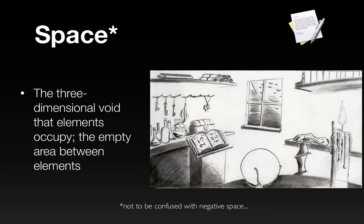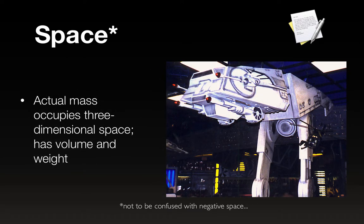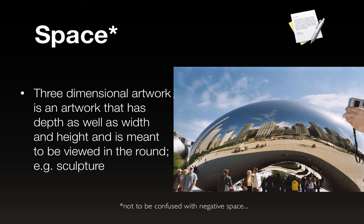We're talking about a three-dimensional scene here — of course the illusion of a three-dimensional scene, since we're looking at a flat image. An actual three-dimensional object is going to occupy an actual three-dimensional space; three-dimensional objects have volume and weight. That's a way of saying sculptures have mass and size. Three-dimensional artwork has depth as well as width and height and is meant to be viewed in the round — for example, sculpture.